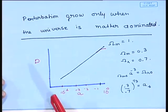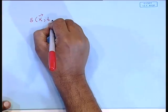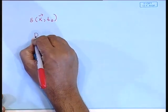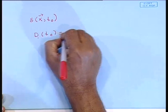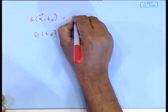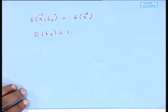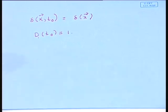One can work this out explicitly. As a matter of convention, it is convenient to choose the growing mode D such that D(t_present) = 1, so that the observed density fluctuation is δ(x). At any earlier epoch the perturbations were smaller, and one multiplies by D(t) < 1 to get perturbations at that earlier time.